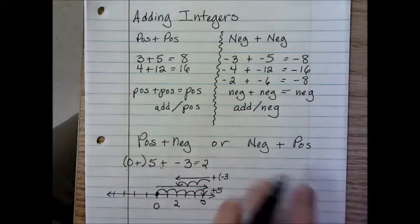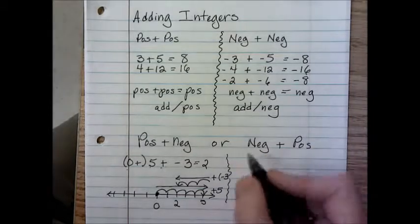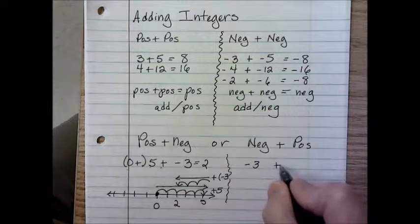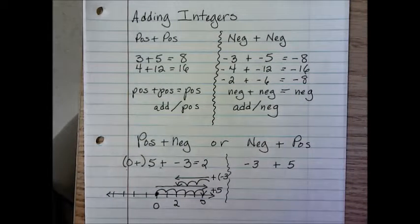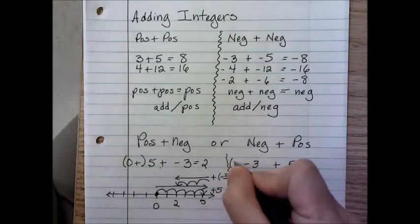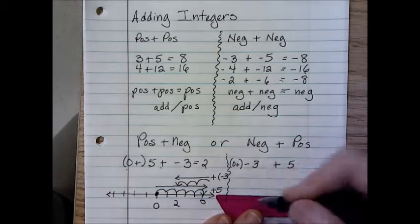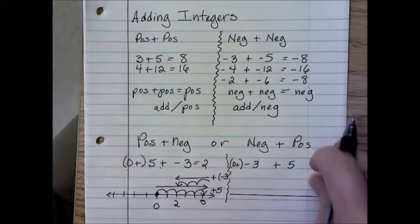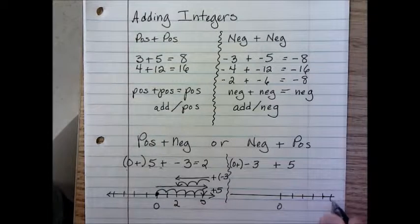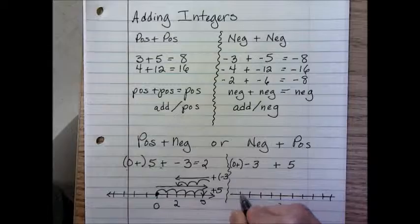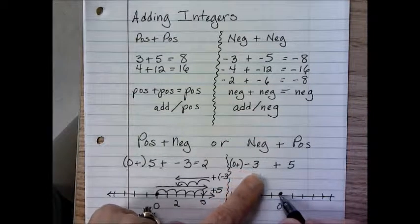If I have a positive 5, that means I'm going to 5 on the number line. When we add positive numbers, we go to the right. Now I'm going to add negative 3, which means I go three places to the left on the number line. That brings me to positive 2. So 5 plus negative 3 equals positive 2.